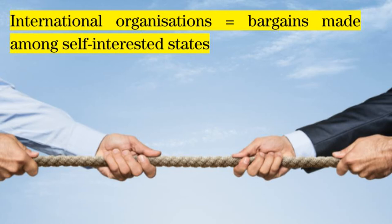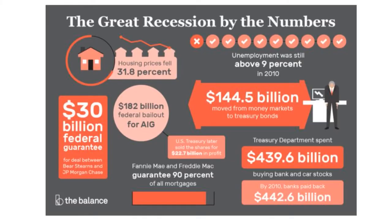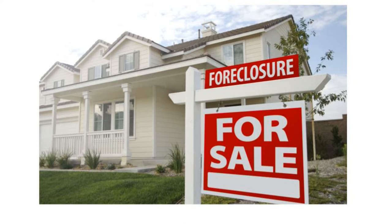In other words, as bargains made among self-interested states. It is characteristic of the liberal approach to see international organizations in terms of the costs and benefits that they offer various actors. Liberalism also often stresses the concept of interdependence. For example, liberals believe that many economic exchanges link societies together, and thus the overall economic fates of countries are similarly connected. For example, a housing market crisis in the United States could affect economies throughout the world, as happened in 2008 and 2009.